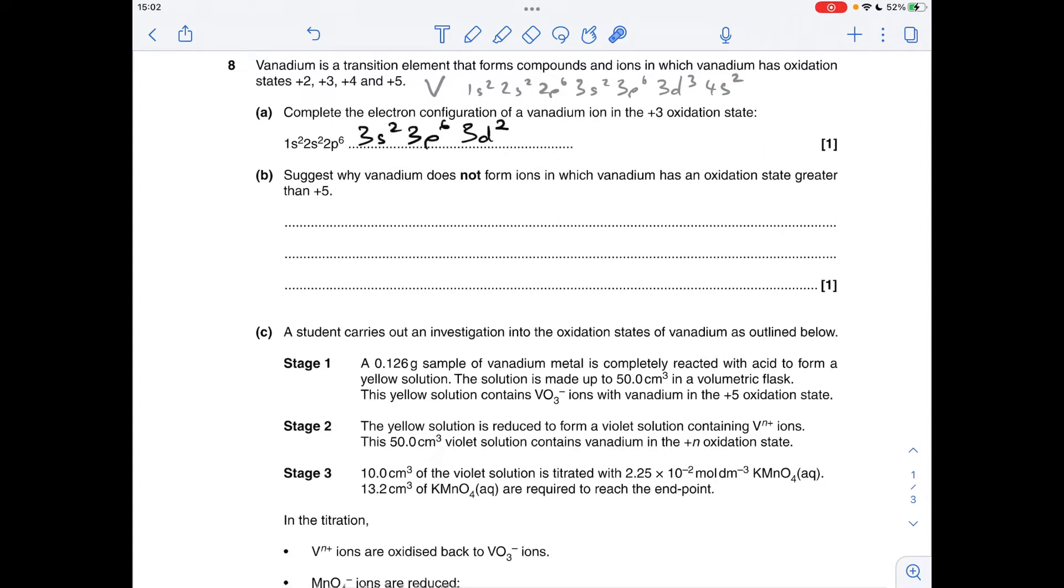So part B now, this is going to come in quite handy for that as well, so suggest why vanadium doesn't form ions in which vanadium has an oxidation state greater than plus five. Well, you can see it's got five valence electrons, 3d³, 4s².